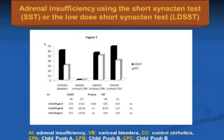Dear colleagues, a large percentage of patients with variceal bleeding have abnormal results from the short synacthen test based on the criteria of critical illness related corticosteroid insufficiency. Among patients with adrenal insufficiency, those with variceal bleeding had higher baseline and peak levels of cortisol than stable patients with cirrhosis but similar delta max values. This indicates that during variceal bleeding there is a hyperactivation of the HPA axis.